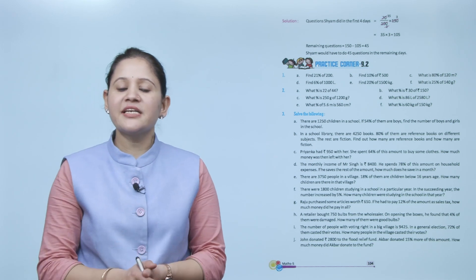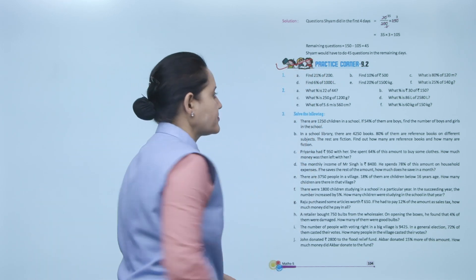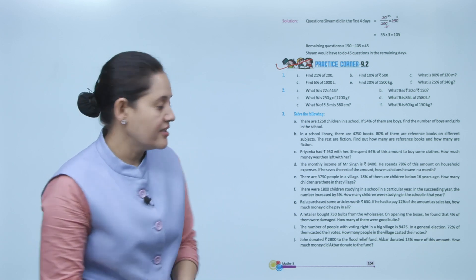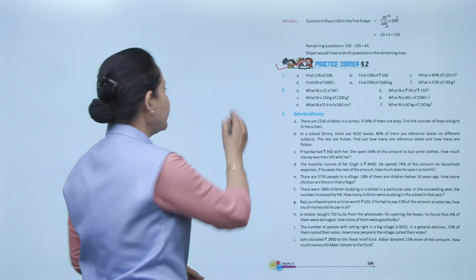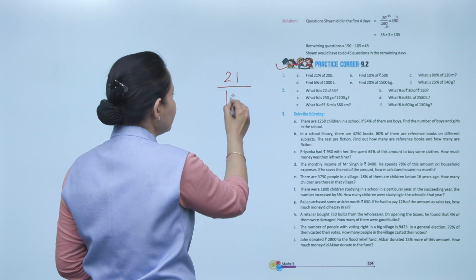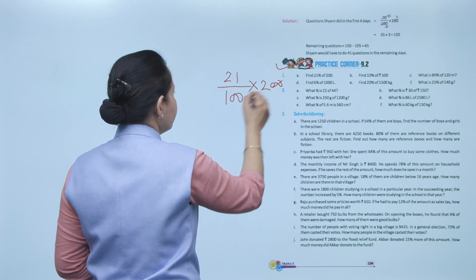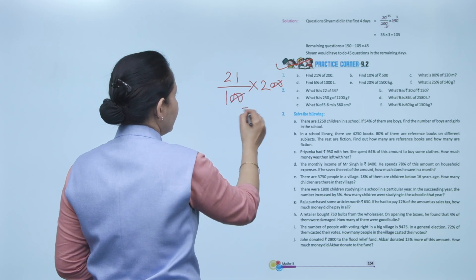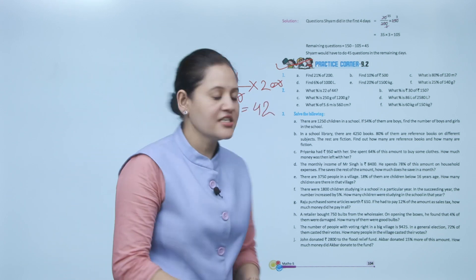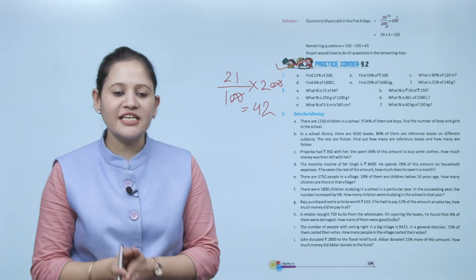Next is practice corner 9.2. Find 20% of 200. First, remove the percentage sign — put 100 as the denominator: 20/100 × 200 = 40. So the answer is 40. Practice all the questions in this exercise.